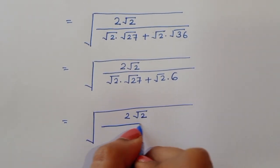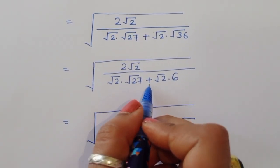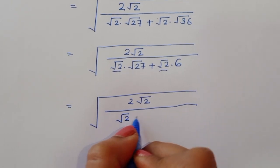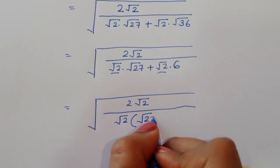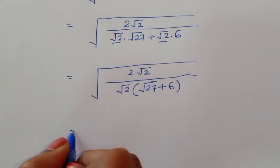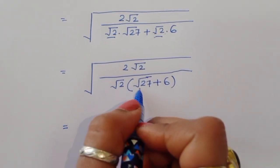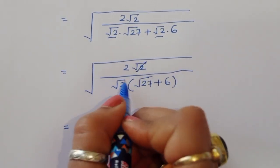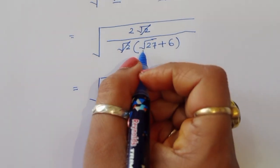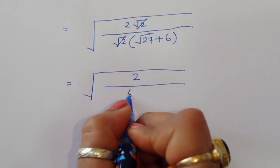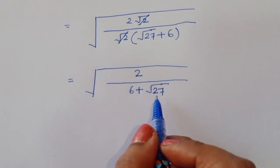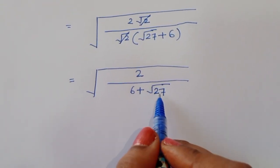We have 2 times square root of 2 divided by square root of 2 times square root of 27 plus square root of 2 times 6. Taking square root of 2 as common from the denominator, we get square root of 2 times (square root of 27 plus 6). The square root of 2 cancels, leaving 2 divided by (square root of 27 plus 6).